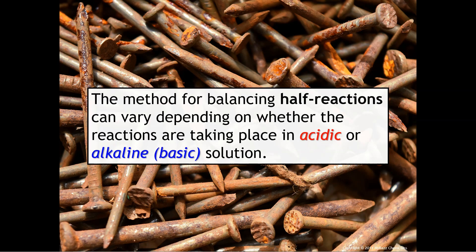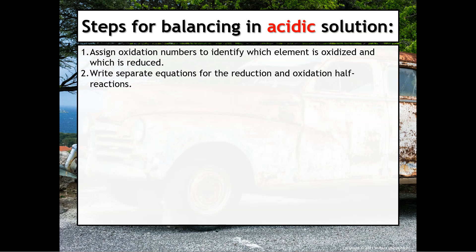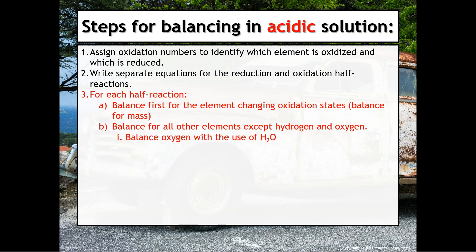The method for balancing half reactions can vary depending on whether the reactions are taking place in acidic or alkaline, which represents a basic solution. The steps for balancing in acidic solution will look very similar to what we've been doing. You'll assign oxidation numbers to identify which element is oxidized and which is reduced, then write separate equations for the reduction and oxidation half reactions. For each half reaction, you'll first balance for the element changing oxidation states, then balance for all other elements except hydrogen and oxygen, then balance for oxygen with water, and balance for hydrogen with H+, because balancing in acidic solution means you have lots of H pluses floating around in solution.